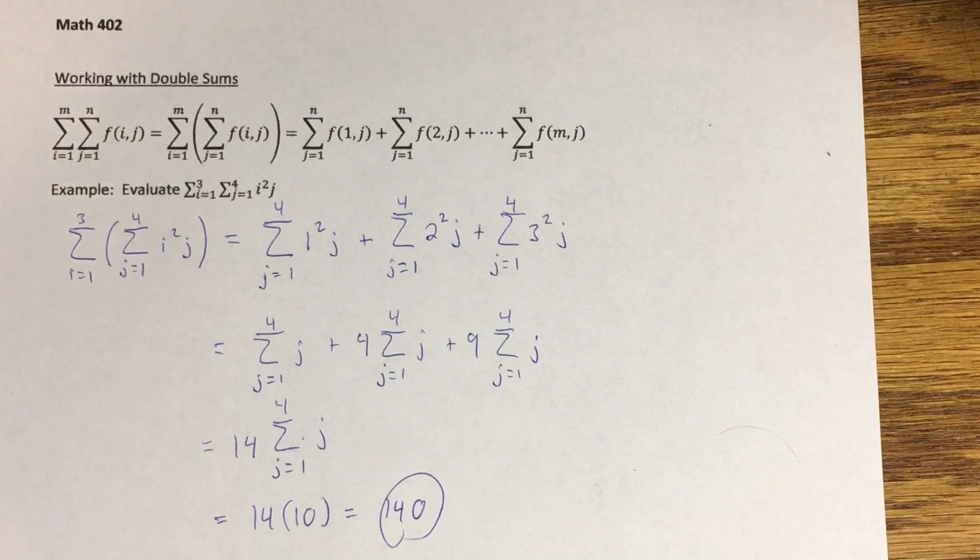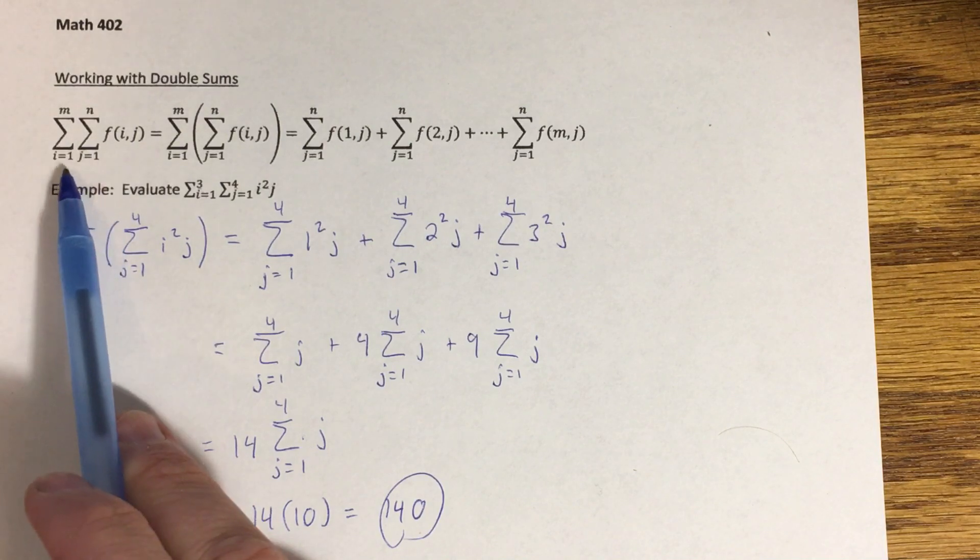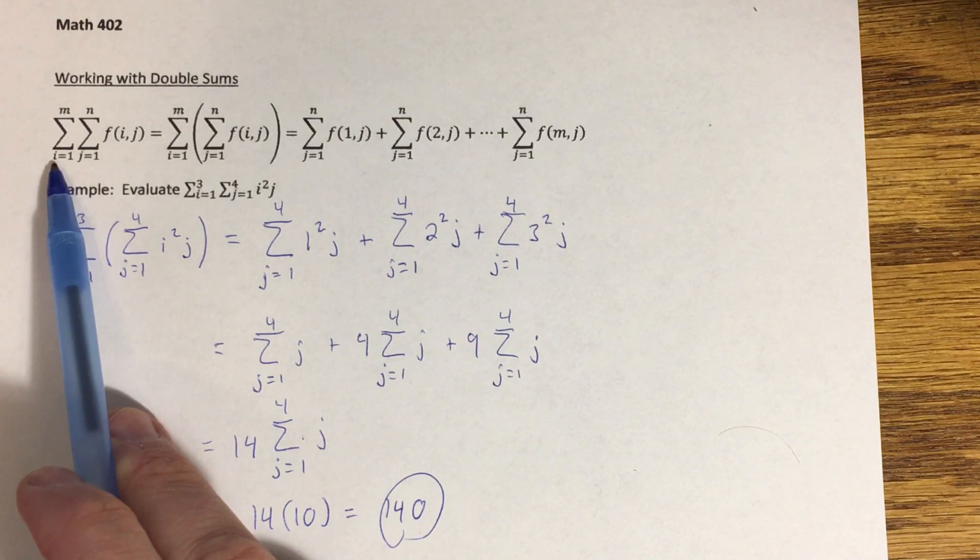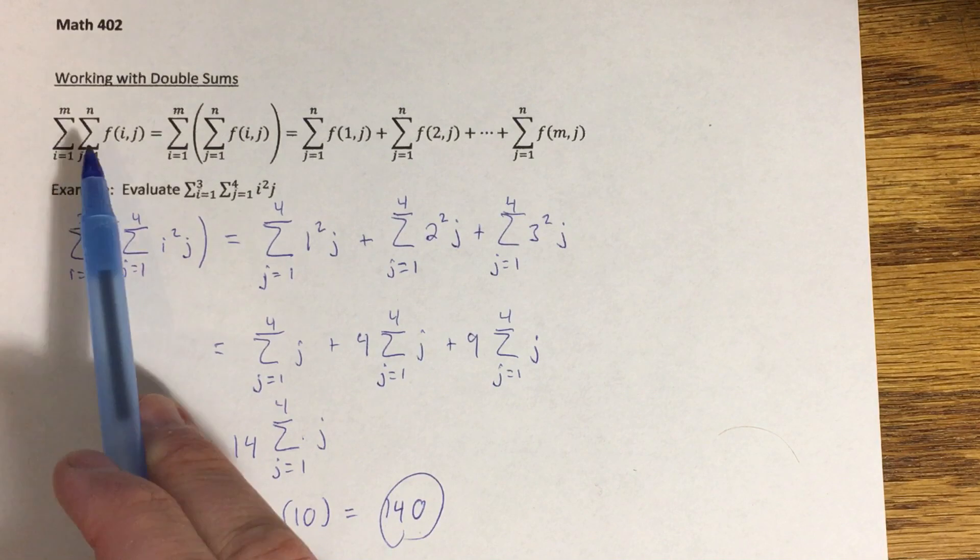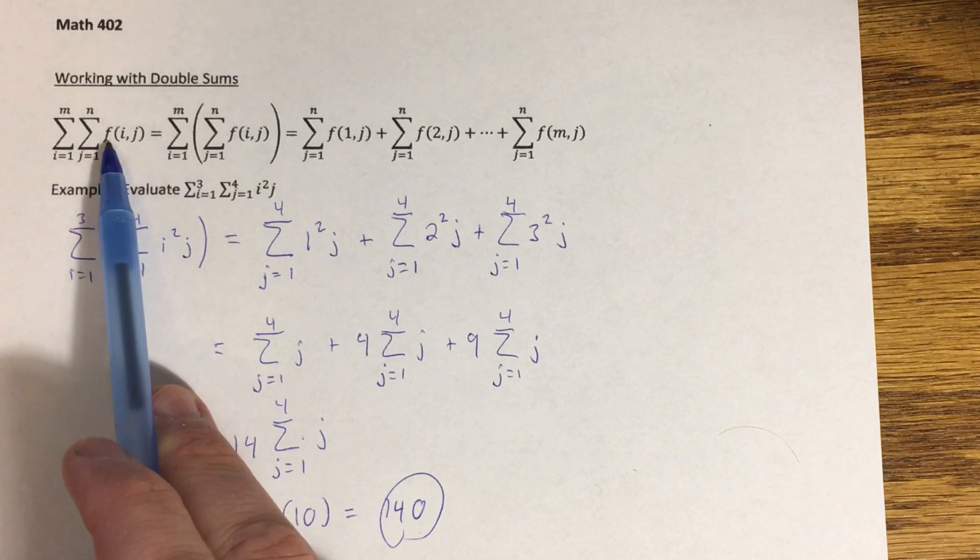Okay, so let's talk about how to evaluate a double sum. First of all, if the notation is a little bit confusing, you're going to notice that we have these two summation symbols. One is indexed by an i, the other one is indexed by a j, and the function showing up here is a function of both that i and that j.